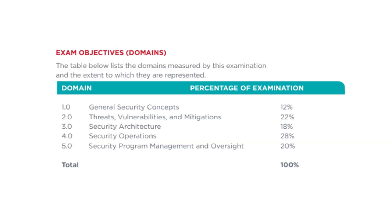I hope you found this information helpful as you prepare for your CompTIA Security+ exam. Remember, the passing score for the Security+ exam is 750 on a scale of 100-900, so keep that in mind as you study. If you have any questions, comments, or tips of your own, feel free to leave them in the comment section below. Don't forget to like this video, subscribe to the channel, and hit the notification bell so you don't miss any future updates. Good luck on your exam, and see you next time.